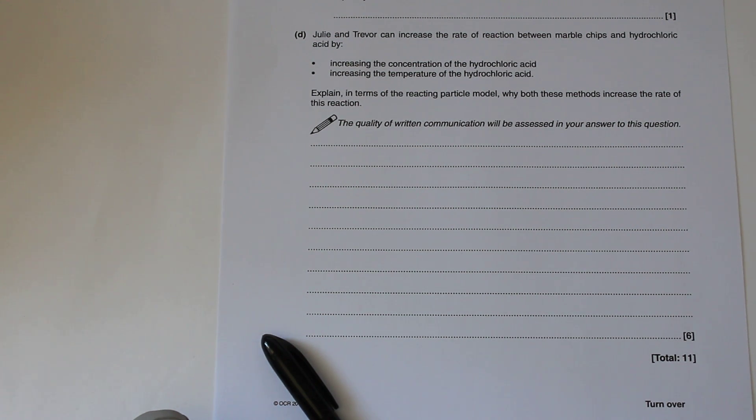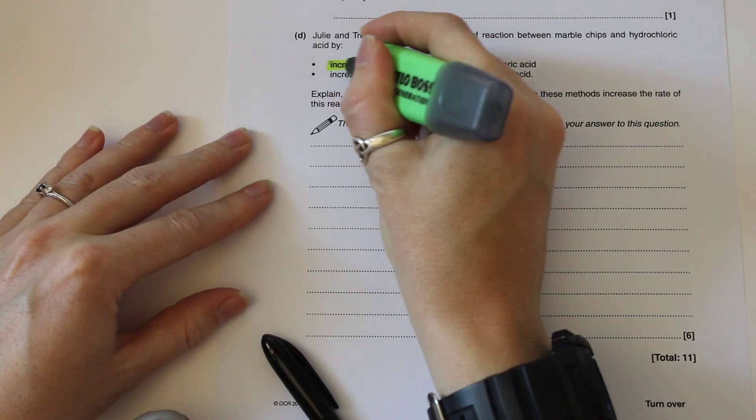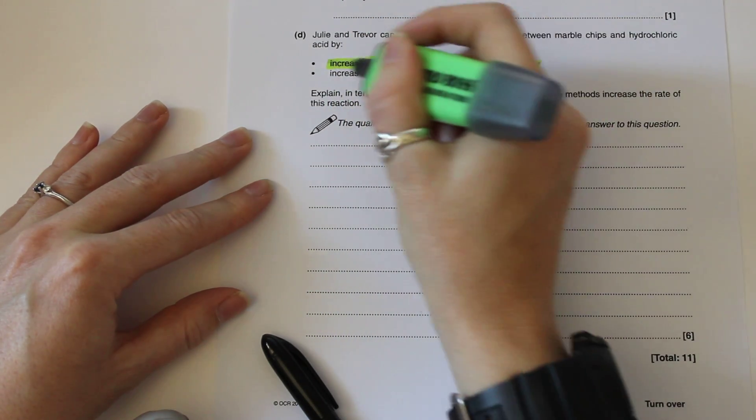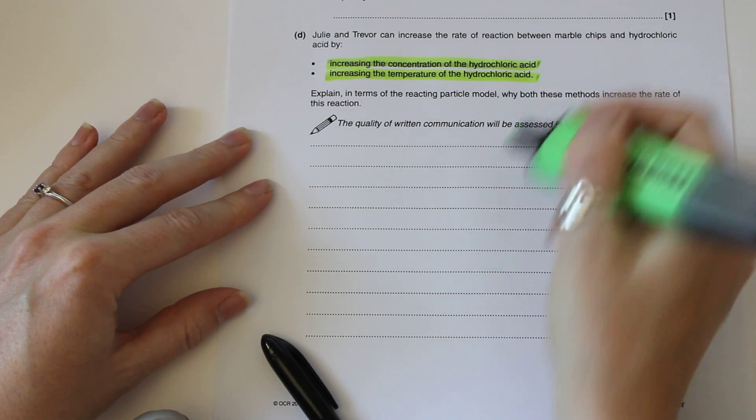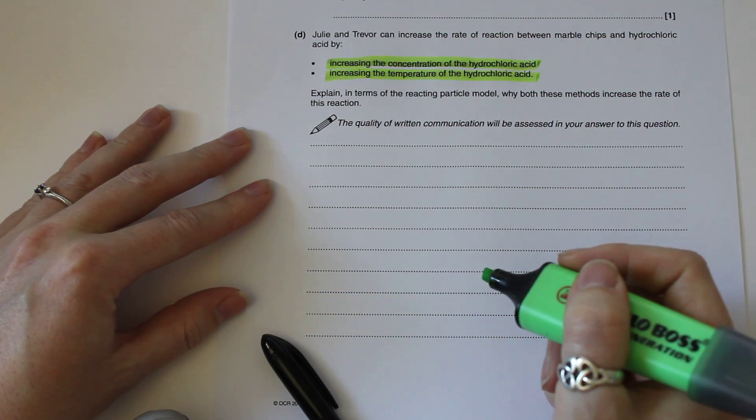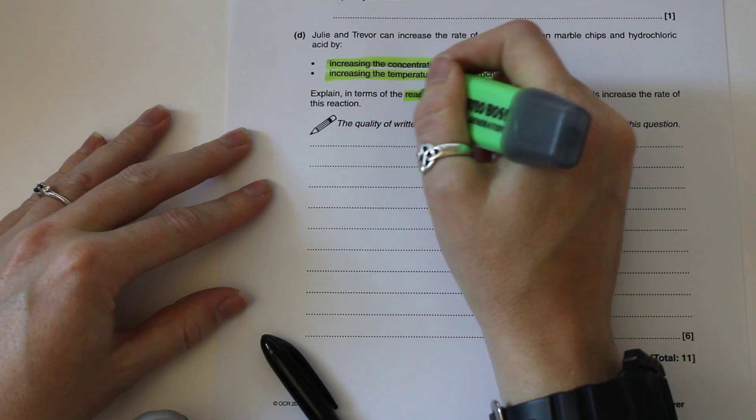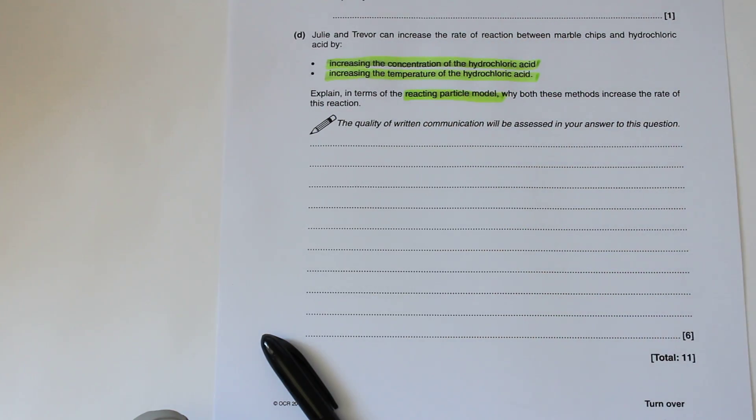So first thing to do is pick out the two things we're going to be talking about as usual. We've got to talk about increasing the concentration and increasing the temperature. And the key thing about these rates of reaction questions is we've got to talk about the reacting particle model.